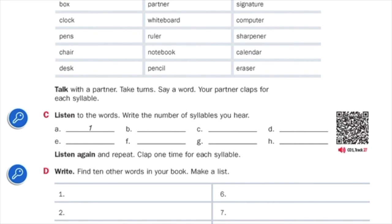Let's check the answers by clapping while we say the words. B. China. China. Two syllables. C. Student. Two syllables. D. Name. Name. One syllable.